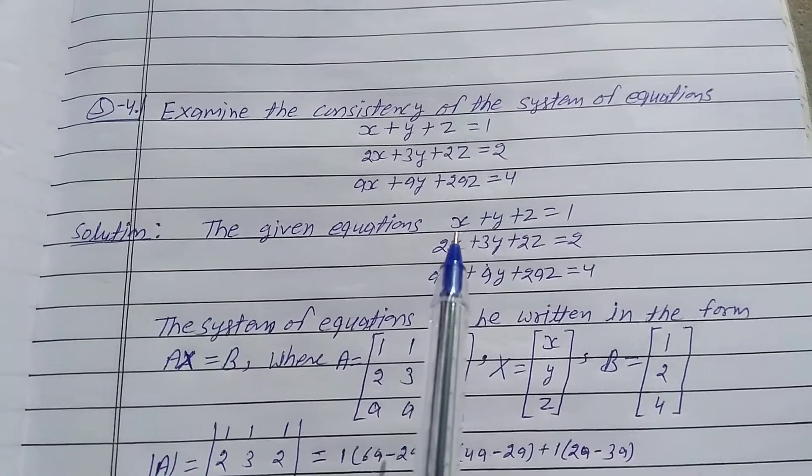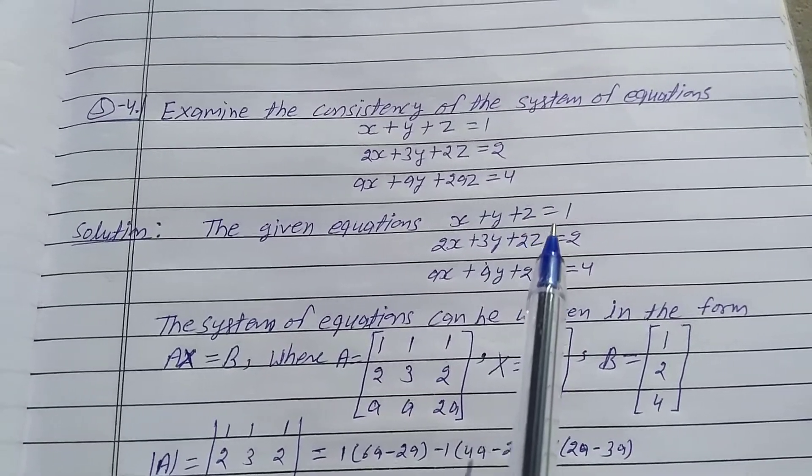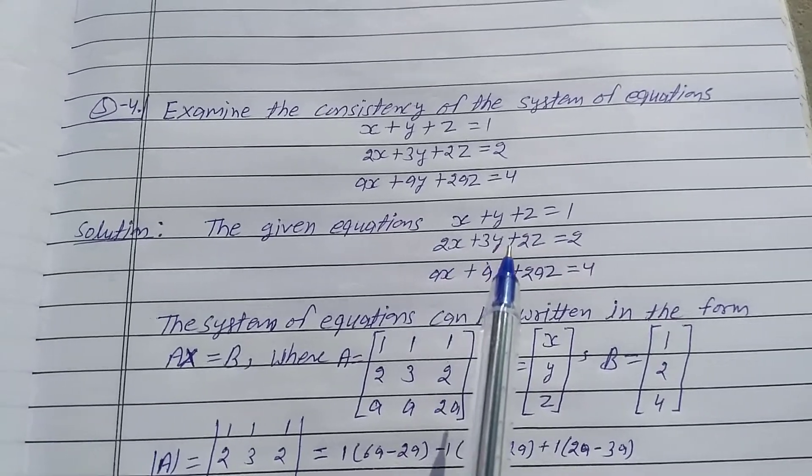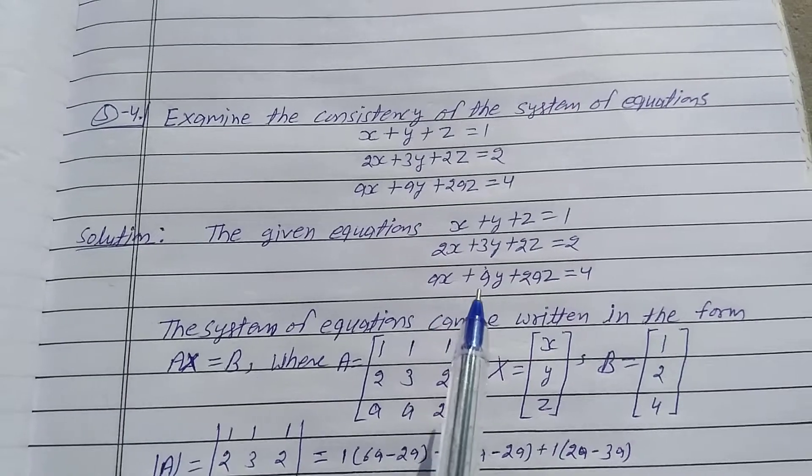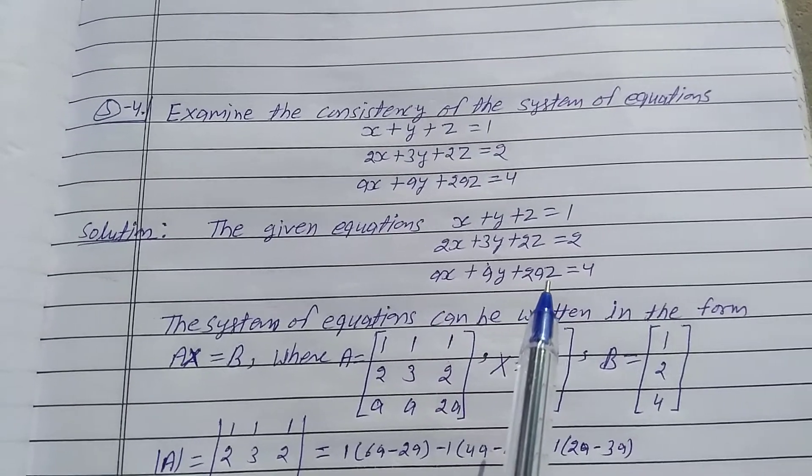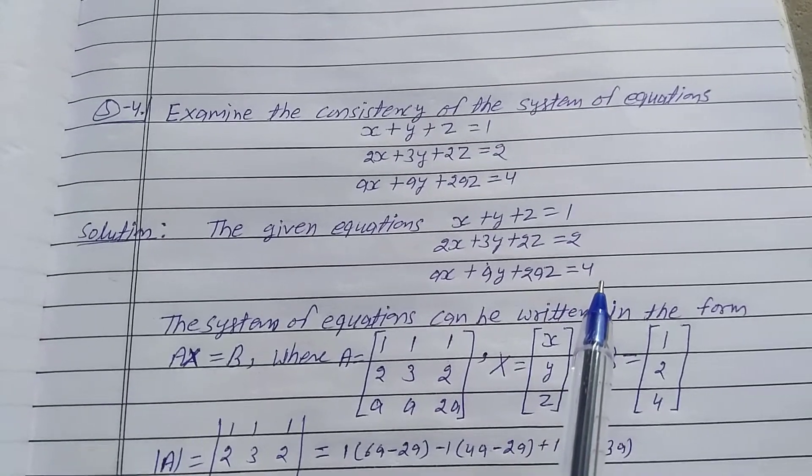Solution: The given equations are x plus y plus z is equal to 1, 2x plus 3y plus 2z is equal to 2, and ax plus ay plus 2az is equal to 4.